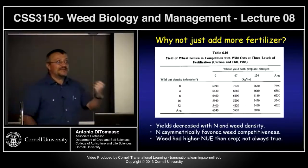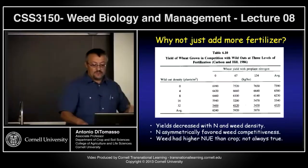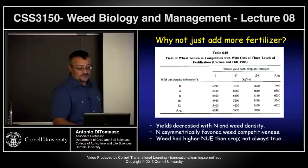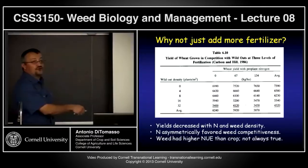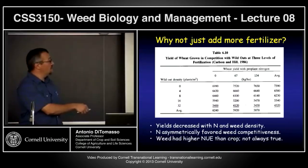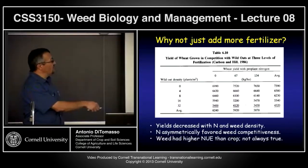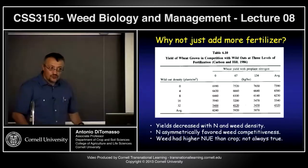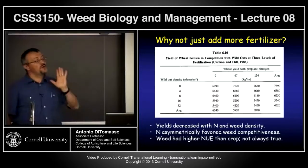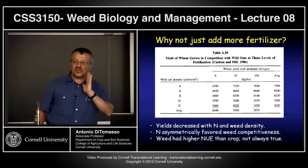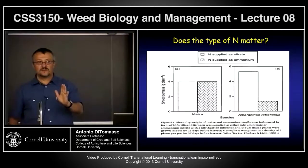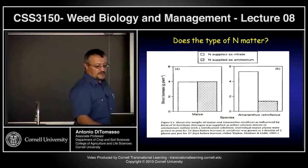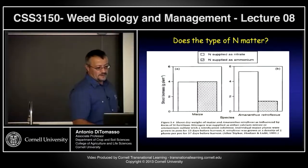Nitrogen is asymmetrically favored — weeds are taking it up much better than the crop, in this case wheat. Weeds have a higher nutrient use efficiency, or in this case nitrogen use efficiency, than the crop. It's not always true, but in most cases weeds have been selected for this. Very important to keep that in mind.